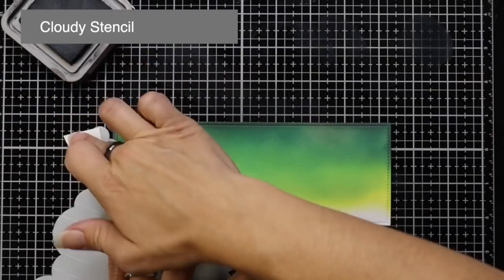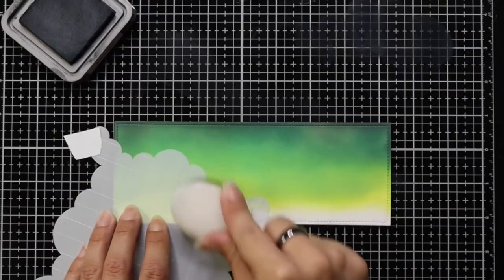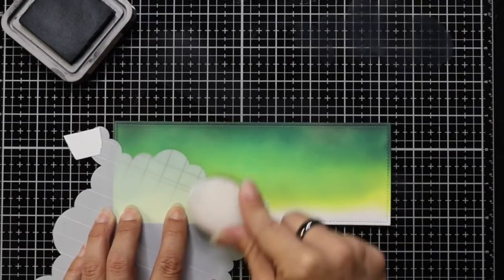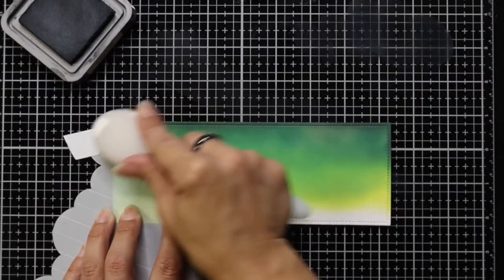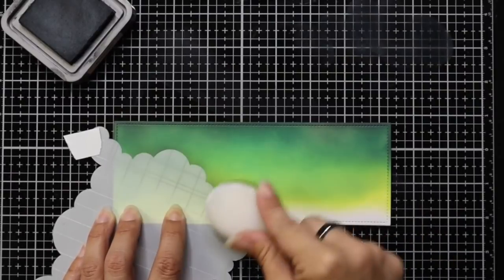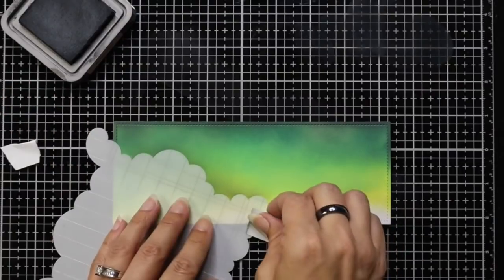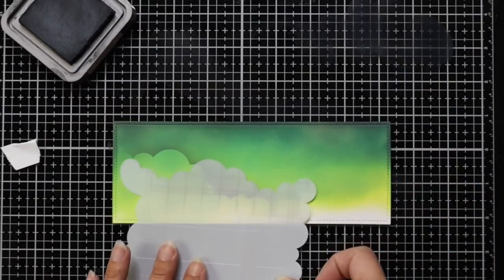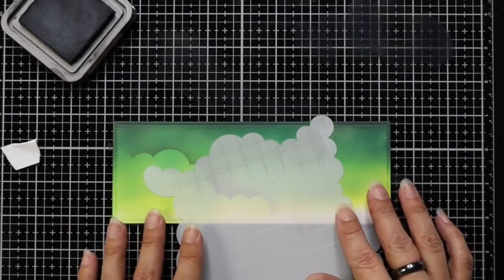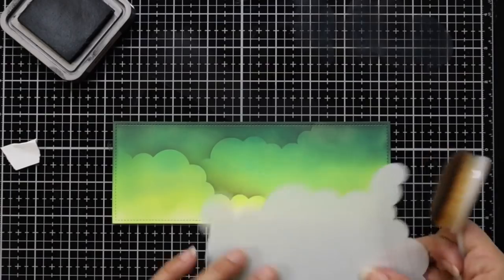Then I'm bringing in the cloudy stencil. I'm just bringing in the Black Soot ink once again, starting on the stencil, working my way up. That's going to give me the softest look. I didn't want these to be real stark. Then I'll remove that Post-it tape, and I'm going to kind of tilt my cloudy stencil. This is how I'm making this 6x6 stencil work on a slimline card. I'm going to tilt it so it's going off of the edge of the cardstock.